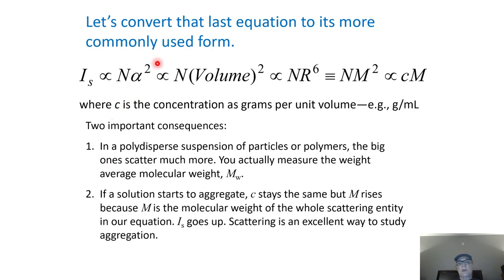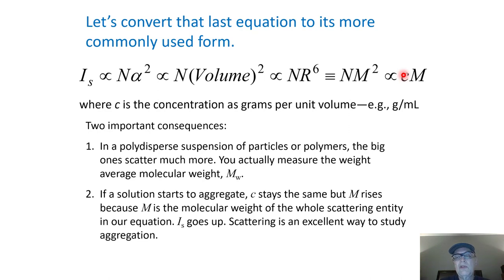Another way to look at that equation is to recognize that radius to the sixth — that's volume squared — would be something like mass squared for a solid object. So intensity of scattering is proportional to concentration times molar mass, or mass of the whole aggregate if it's an aggregated object. This is extremely important and extremely reliable — this equation is basically as good as the ideal gas law. Intensity for a small scatterer is just proportional to concentration times mass.